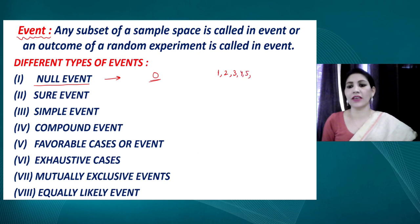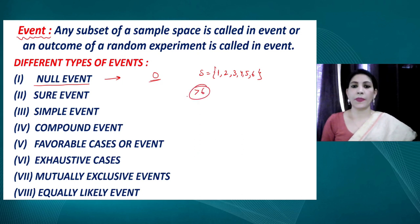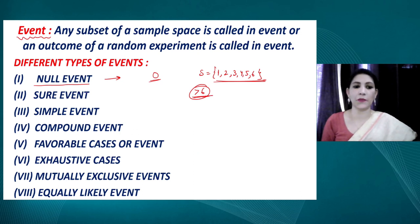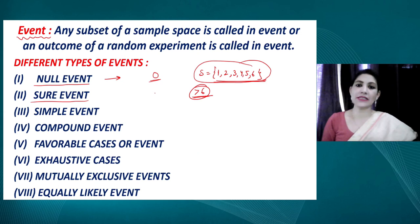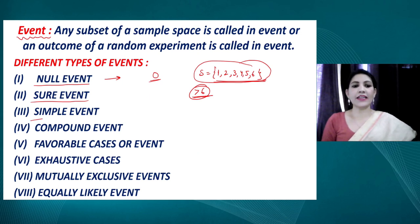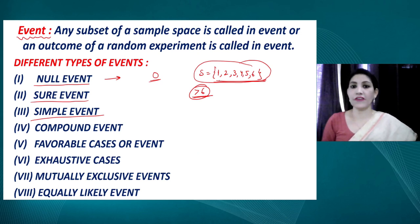For example, if we toss a die, the possible outcomes are 1, 2, 3, 4, 5, and 6. If event E is defined as getting a number greater than 6, there is no such outcome possible — that is a null event. A sure event is one that is certain to occur.